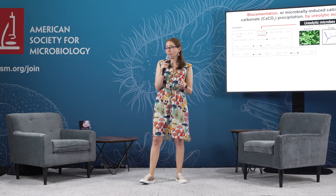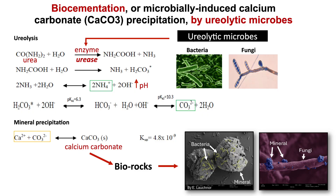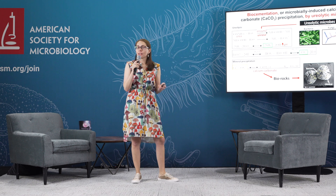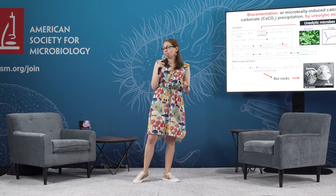Ureolytic microbes have the ability to produce an enzyme — urease — that can catalyze the hydrolysis of urea. Urea is a common molecule found in nature through protein metabolism. So through a series of chemical reactions, the breakdown of urea results in the production of carbonate and ammonium ions, along with an increase in the pH of the solution. At this point, we can potentially promote mineral precipitation, but we need to add a source of calcium ions. Under an alkaline environment and in the presence of high enough concentrations of calcium and carbonate ions, we can precipitate calcium carbonate minerals.